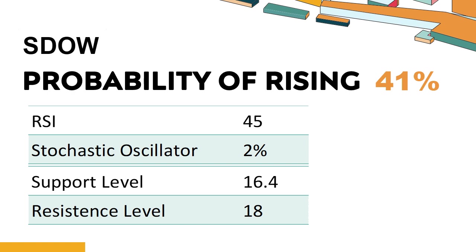The current stochastic oscillator of SDOW is 2%. When the indicator falls below the 20 level, it is usually considered oversold, indicating that a price rebound or recovery is likely for the stock. An oversold condition occurs when the stock price falls too fast and too much in a short period of time, which may indicate that the selling pressure has exhausted.